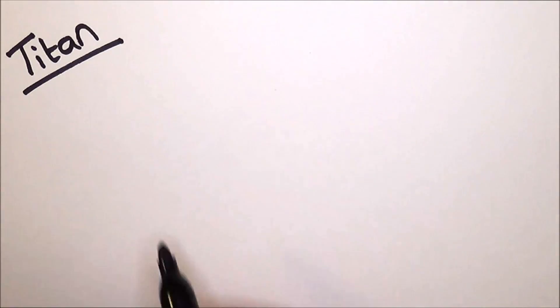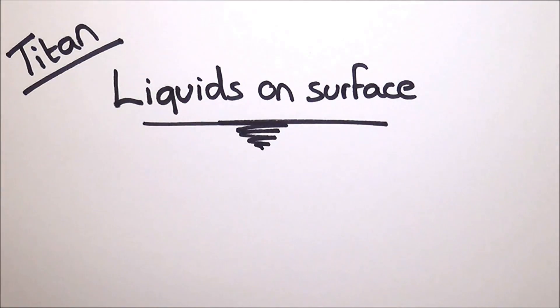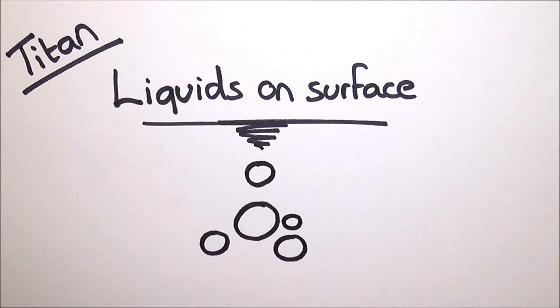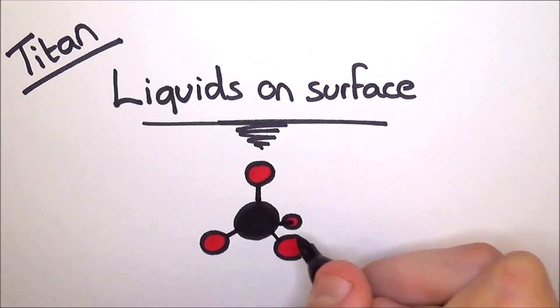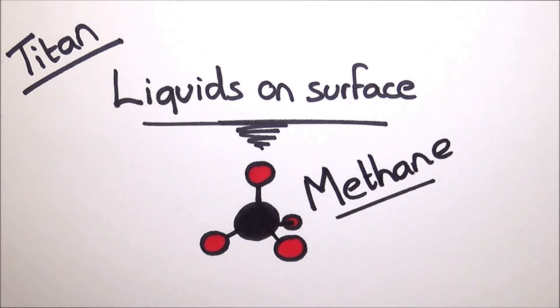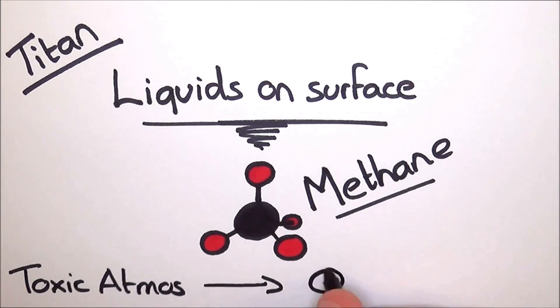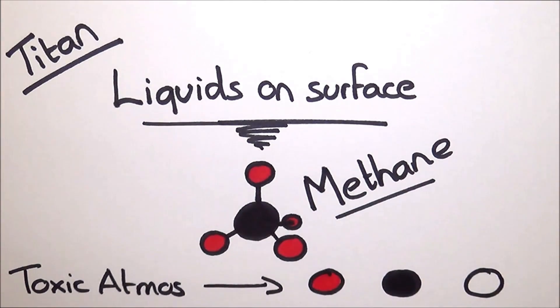Moving on to Titan. So why is Titan on this list? I mean, it's the only moon in the outer solar system with running liquids, just not ones that you could hope to survive in. They are mainly liquid methane based. But when the sunlight hits the thick, toxic atmosphere, it produces hydrogen cyanide. This is believed to be vital for pre-life.